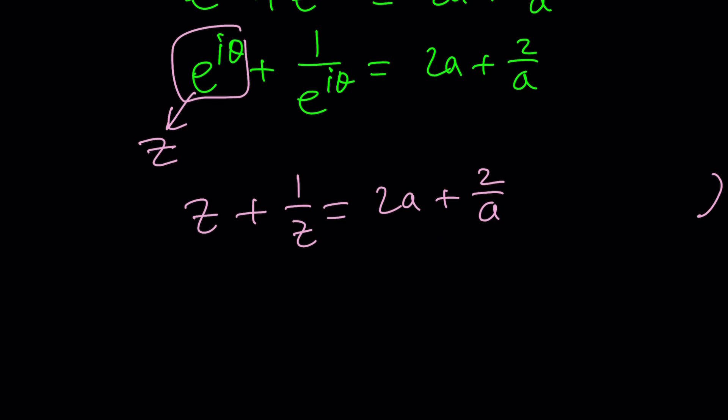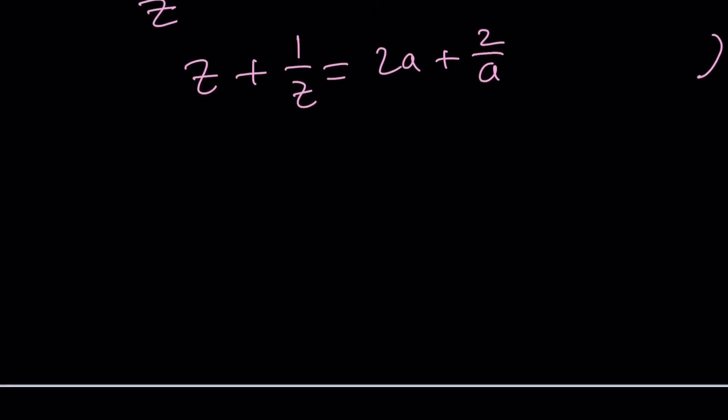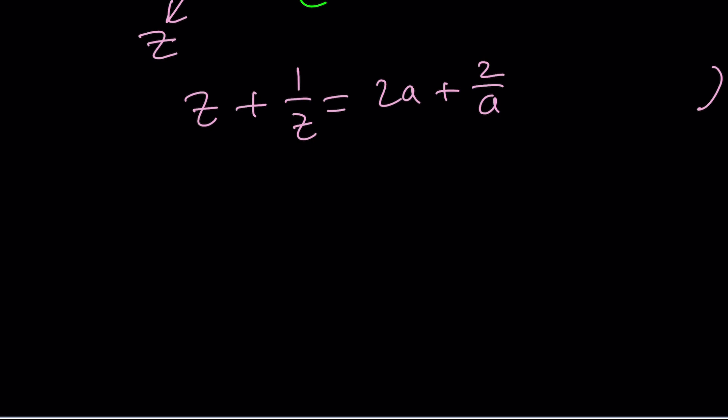If z is 2A, we get 2A plus 1 over 2A. That's not the same thing as 2 over A. Maybe for some values of A they might be equal. 4A equals A, which means A is 0. It's not going to work. So this didn't work. We need to proceed with what we have. Forget about the doubling thing. We just have to solve it. We can use the quadratic formula. Multiply everything by z. Z squared plus 1 equals 2A plus 2 over A multiplied by z.